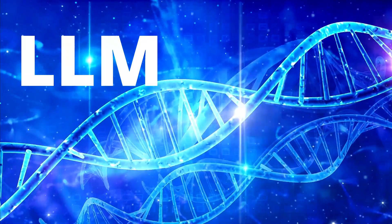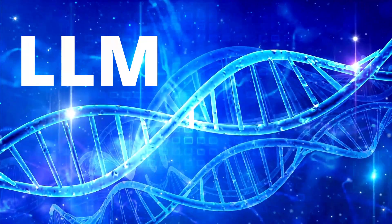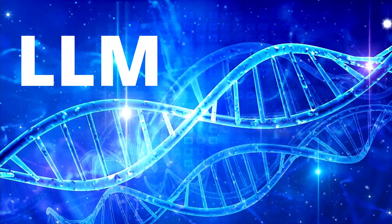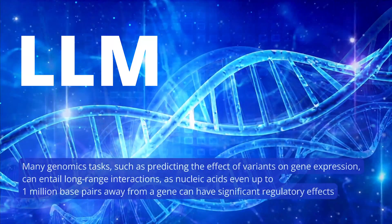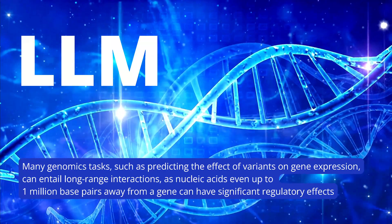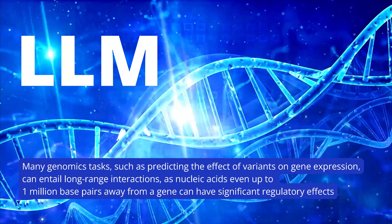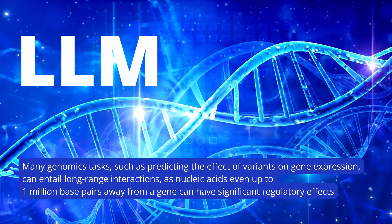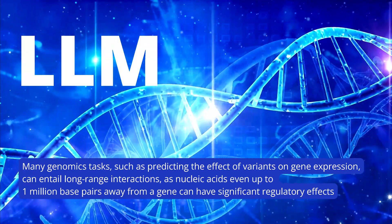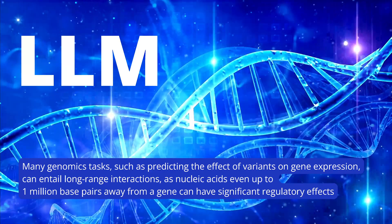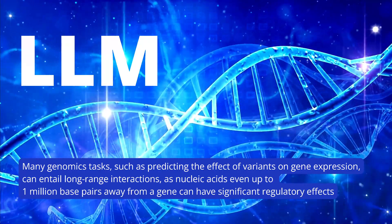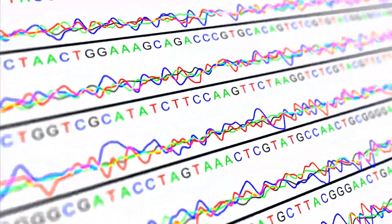What are researchers at universities and biolabs doing? Like anybody else, they use large language models for many of their genomic tasks — such as predicting the effect of variants on gene expression. Nucleic acids even up to one million base pairs away from a particular gene can have significant regulatory effects. So you have to choose an LLM specialized in long-range interaction. This study started before ring attention with a context length of one million to ten million tokens was operational.